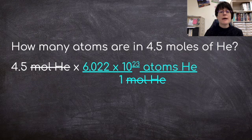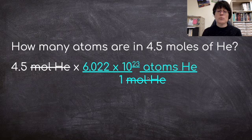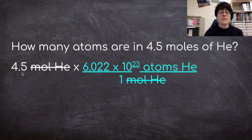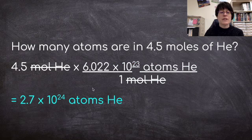So remember with our dimensional analysis, you'll put 1 mole of helium on the bottom. You'll put the 6.022 times 10 to the 23rd atoms of helium on the top so that you can cross these out. So now we are in atoms and that's what we're looking for. So we can simply multiply 4.5 by Avogadro's number and we get 2.7 times 10 to the 24th atoms of helium.